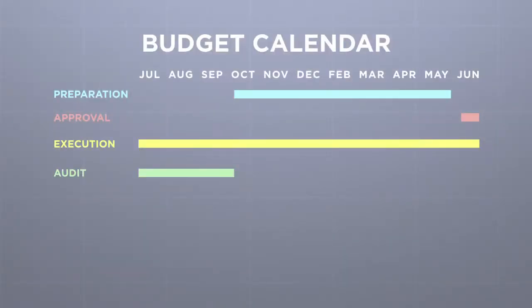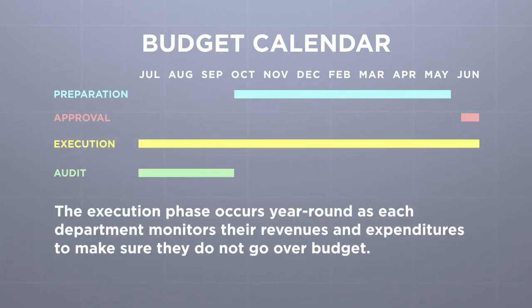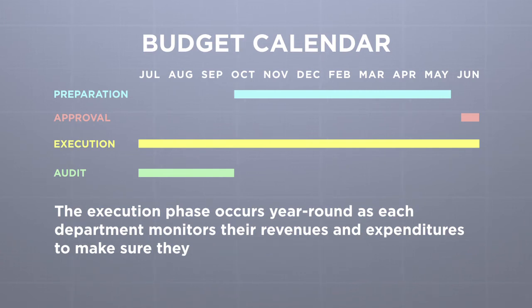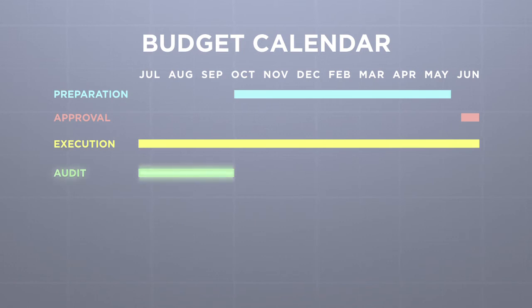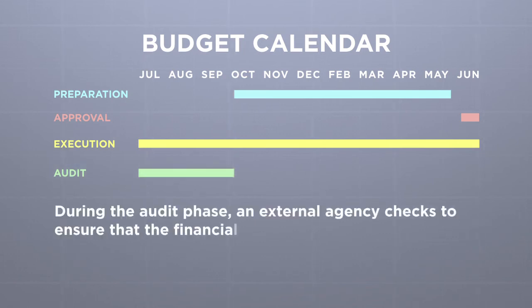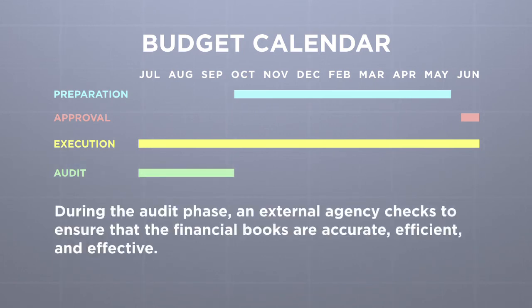The third phase of the budget process is the execution phase. This occurs year-round as each department monitors their revenues and expenditures to make sure they do not go over budget. The final phase, which occurs from July to September, is known as the audit phase. During the audit phase, an external agency checks to ensure the financial books are accurate, efficient, and effective.